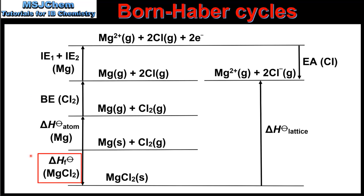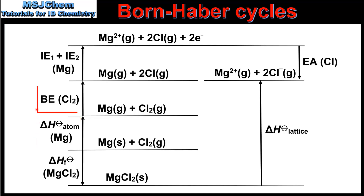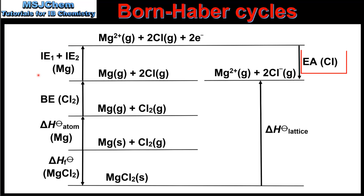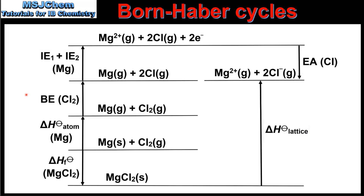They are: the enthalpy of formation, the enthalpy of atomization, the bond enthalpy, the ionization energy, the electron affinity, and the lattice enthalpy. In this video we will go through each of the steps, starting with enthalpy of formation.